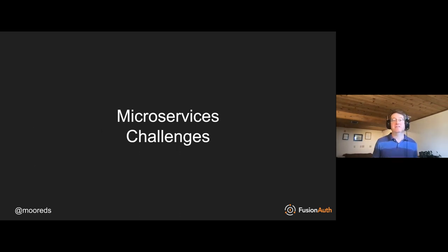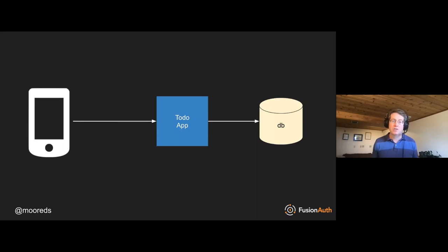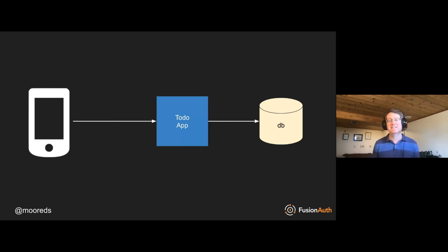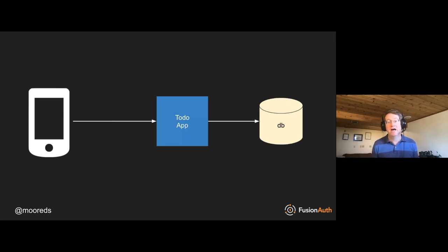Let's talk briefly about the challenges of microservices from the context of auth. This is a typical monolithic app — a simple to-do application that lets you write down to-dos and mark them as done. In this application we have one data store and one application code base. This may scale horizontally or vertically, but at the end of the day you have all your state in one place, and all your code can interact with other pieces via memory or that database.